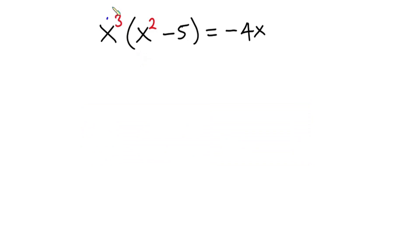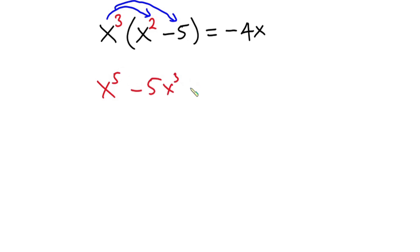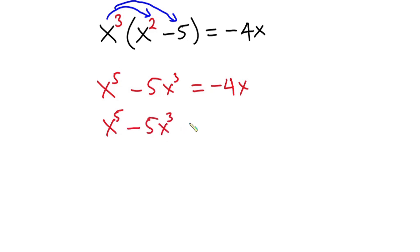First of all, I'll multiply this one across. So we have x to the fifth power minus 5x to the third power is equal to negative 4x. Now let's equate everything to zero. So we have x to the fifth power minus 5x to the third power plus 4x is equal to zero.